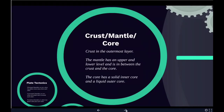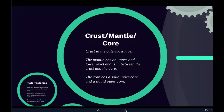Earth's mantle extends to a depth of almost 2,900 kilometers, making it the thickest layer on Earth. The mantle is divided into an upper and lower mantle, separated by the transition zone. The mantle is composed of silicate rocks rich in iron and magnesium relative to the overlying crust. As there is intense and increasing pressure deeper in the mantle, the lower mantle flows less easily and is more solid than the upper mantle.